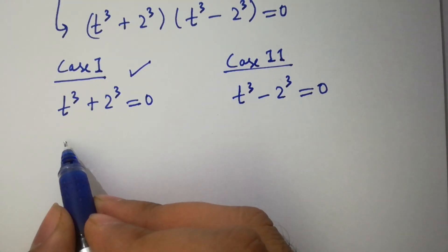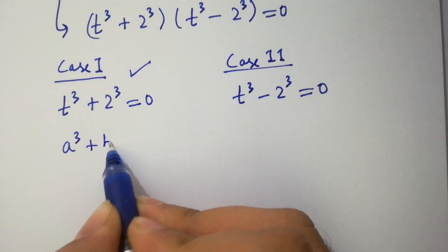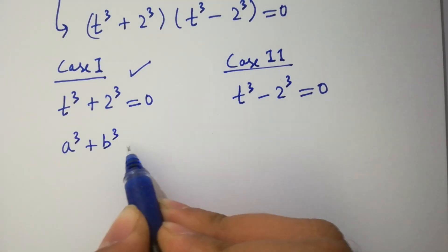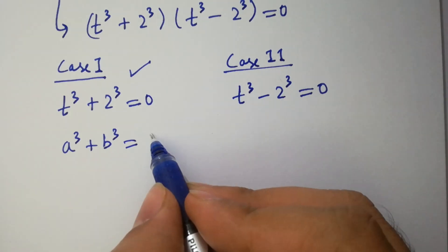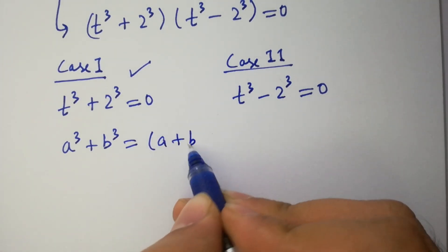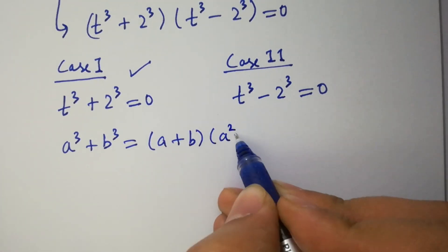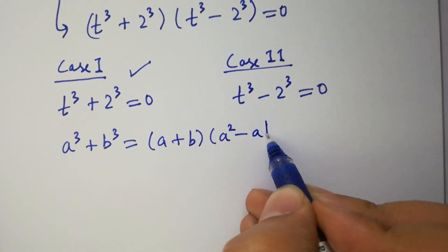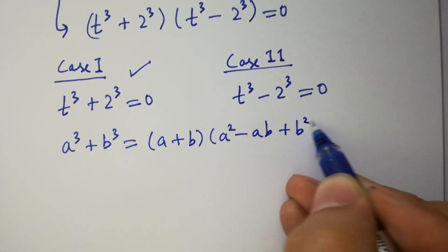First, since a cubed plus b cubed equals a plus b, times a squared minus ab plus b squared.